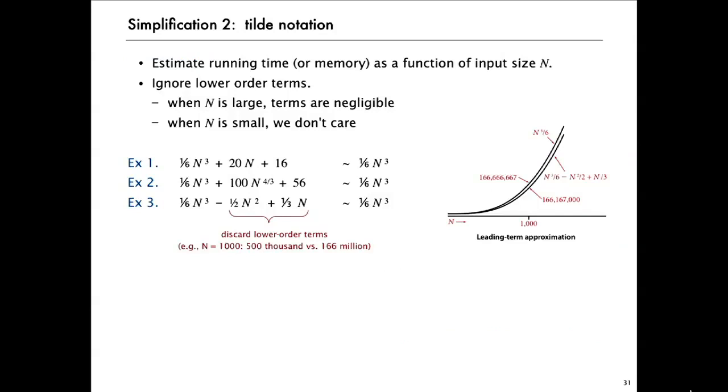And the second simplification is that we're going to ignore low order terms in the formulas that we derive. And there's an easy way to do that. It's called the tilde notation. And the idea is when N is large in a formula like this, the N cubed term is much, much higher than the N term or 16. In fact, so much so that we wouldn't even, we hardly notice these low order terms. So all of these formulas are tilde one-sixth N cubed. And that's a fine approximation to these quantities. And it greatly simplifies the calculations to throw away the low order terms like this.